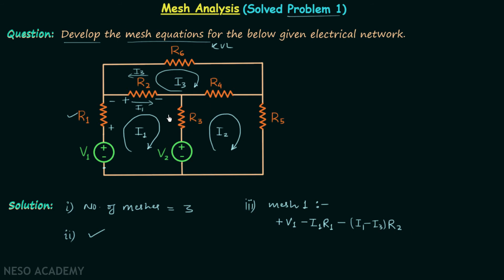Then we have resistor R3, with I1 flowing in one direction and I2 in the other. Since I1 is larger than I2, the voltage drop is minus (I1 - I2)·R3. Then we have the voltage source providing V2, and moving in this direction there is a drop in potential, so we have minus V2. Setting the sum equal to zero gives us the first mesh equation for mesh number one.